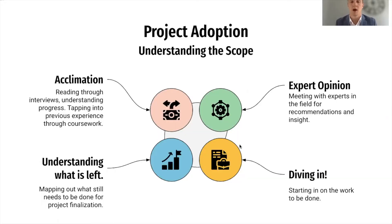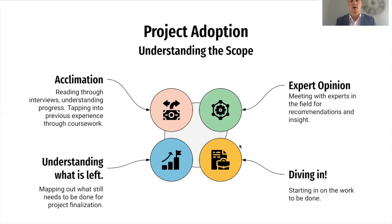The next thing I'd like to touch on is project adoption and understanding the scope. When I had joined the CAI, this was actually a project that had been underway and ongoing. The first thing I had to do was acclimate — I had to read through interviews, understand the process, and tap into previous work in order to take the data and interviews and surveys that had been done and transform them into a document. Then I had to figure out where the project was at and where it needed to go in order to be finalized. I have to thank Marissa Reed for this — she did a great job of helping me understand the project scope and what needed to be done, and she mapped out the timeline for me to get this job finished.